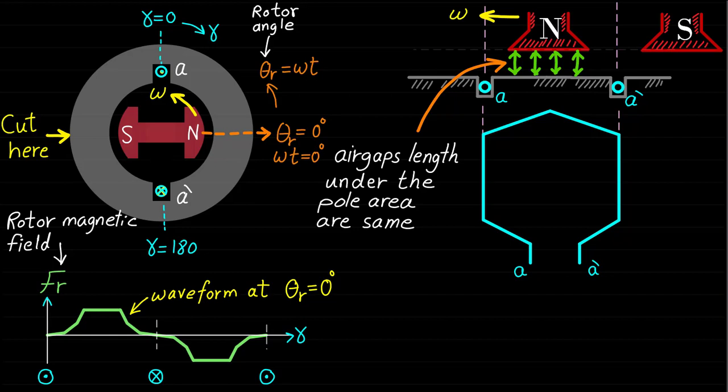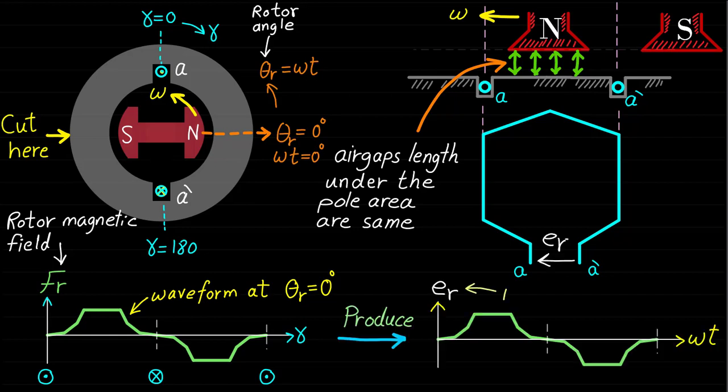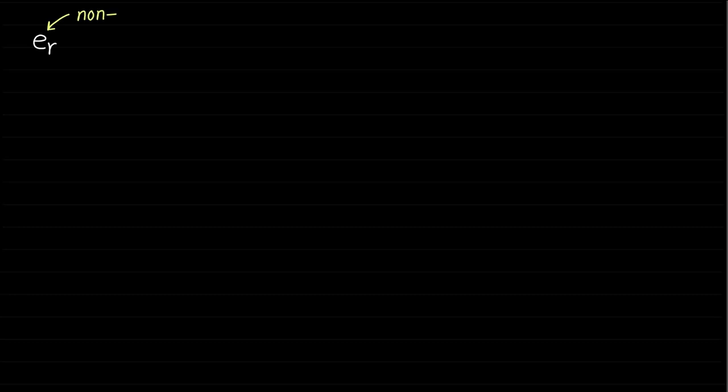Therefore, the reluctance of the rotor magnetic field under the area of the rotor poles are equal or the same. Since the rotor magnetic field distribution is a trapezoidal waveform, the rotor rotating magnetic field will be trapezoidal. Therefore, the shape of the phase-induced back EMF voltage waveform, which is induced by the rotor rotating magnetic field, is a trapezoidal waveform as well. It is very important to know that the trapezoidal waveform, or the non-sinusoidal waveform, of the induced back EMF voltage ER consists of two main components.